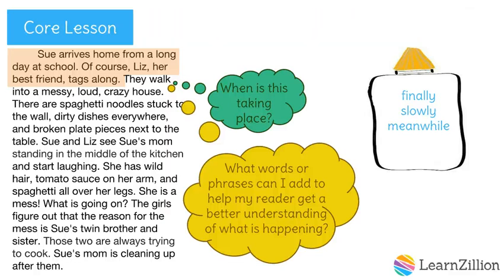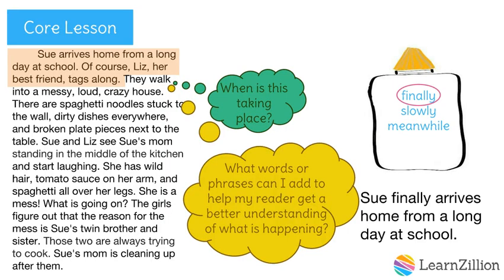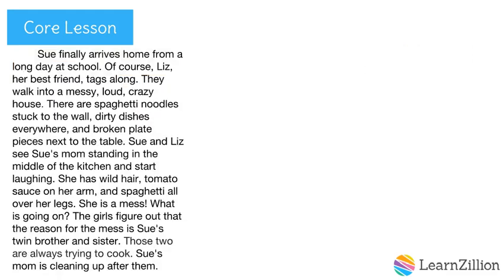How did you do? 'Meanwhile' indicates two events are happening at the same time, so this is not a good choice. 'Slowly' would not make sense because Sue wants to be at home. So the best choice is 'finally.' I'm going to add this transition between the subject and the predicate: 'Sue finally arrives home from a long day at school.'